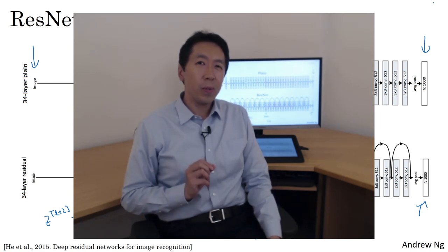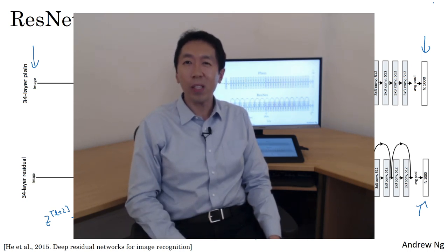So that's it for ResNet. Next, there's a very interesting idea behind using neural networks with one by one filters, one by one convolutions. So what good is a one by one convolution? Let's take a look at the next video.